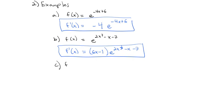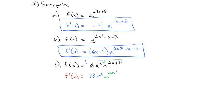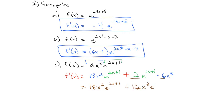Let's try another one, this time using the product rule along with the e to the x formula. Let f of x equal 6x cubed times e to the 2x plus 1. We have a product, so the derivative is the derivative of the first, 18x squared, times the second part e to the 2x plus 1, plus the derivative of the second part — e to the 2x plus 1 times the derivative of the stuff, which is 2 — times the first part, 6x cubed. Cleaning up: 2 times 6 gives 12x cubed, so the final answer is 18x squared e to the 2x plus 1 plus 12x cubed e to the 2x plus 1.